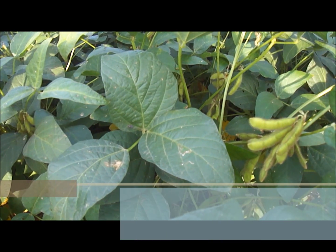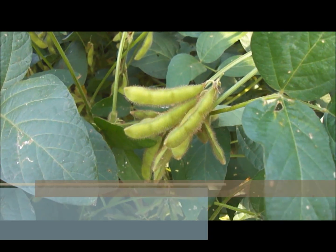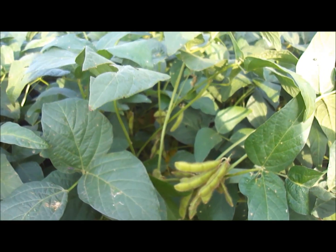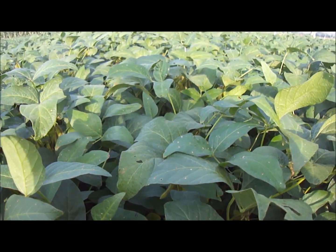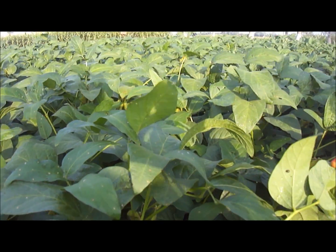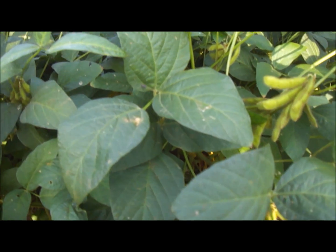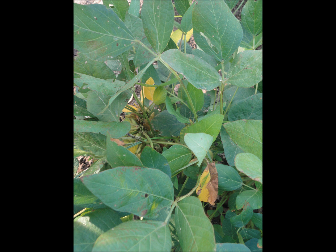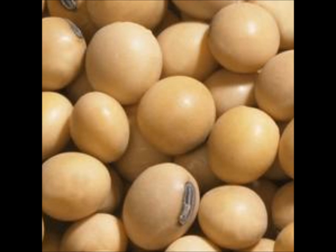Co1 was released in the year 1980 and it was a reselection from a local variety, with a duration of 85 days. The height of the plant is 58 cm. The grain yield in the rain-fed region is 1080 kg per hectare and in the irrigated region is 1640 kg per hectare. The leaves are pointed ovoid, the plant is erect, the pods are covered with brown hairs, the flower color is purple, and the seeds are cream in colour.